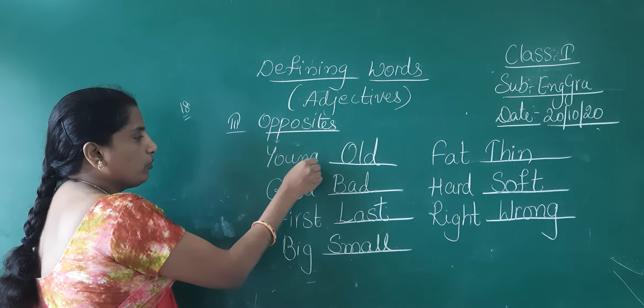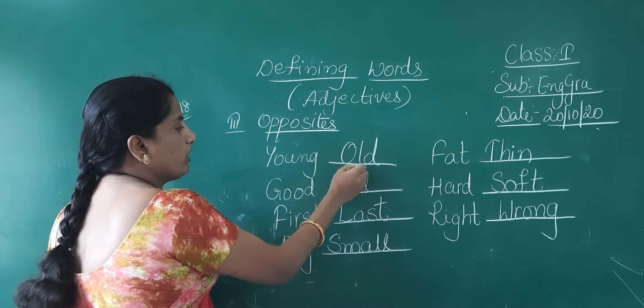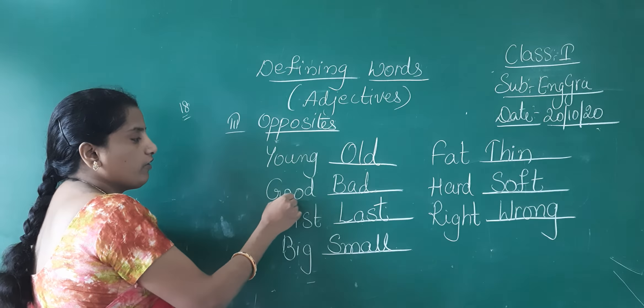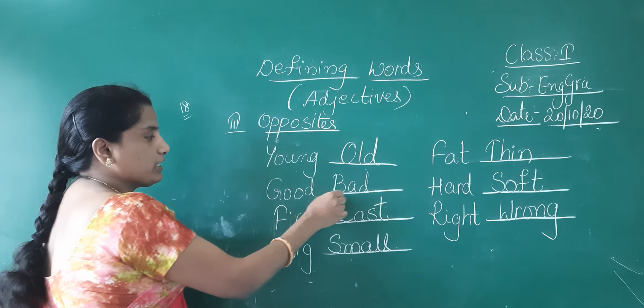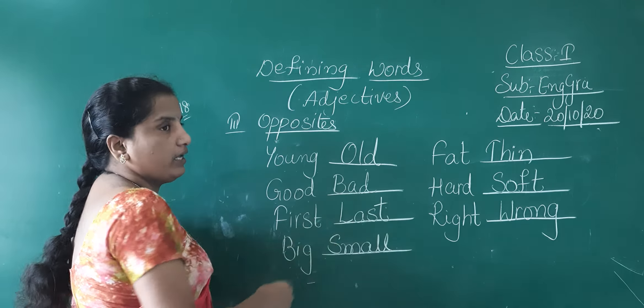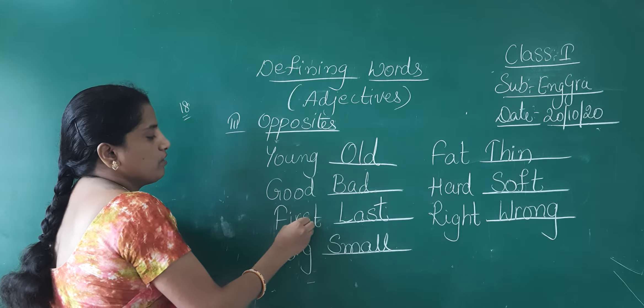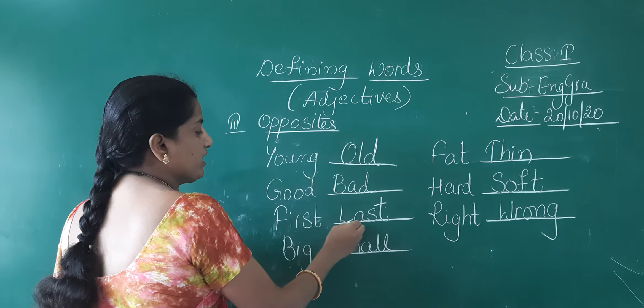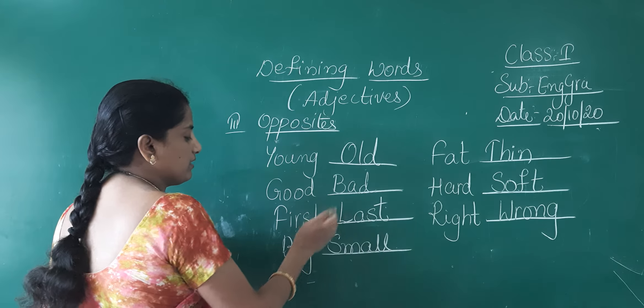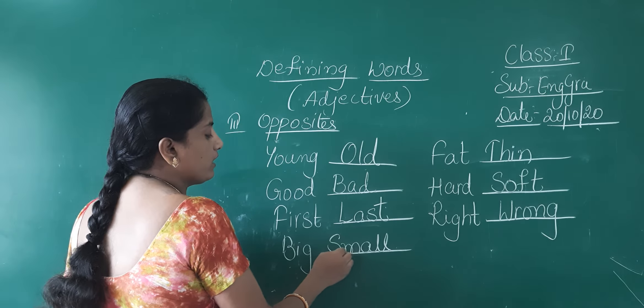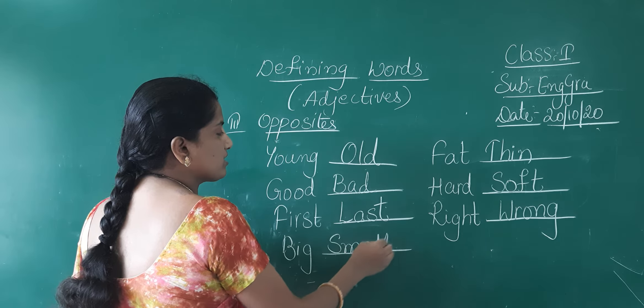See children, Y-O-U-N-G, young. Opposite, old, O-L-D, old. Good, G-O-O-D, good. Good opposite, bad, B-A-D, bad. First, F-I-R-S-T, first. First opposite, last, L-A-S-T, last. B-I-G, big. Big opposite, small, S-M-A-L-L, small.